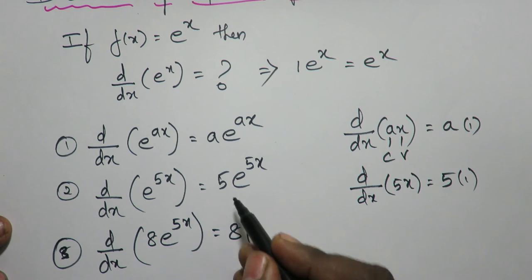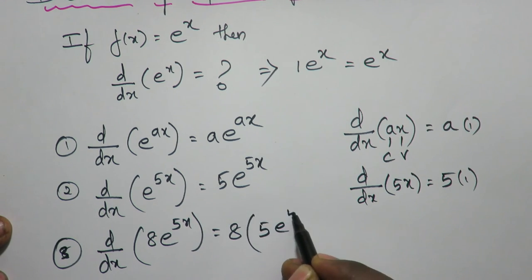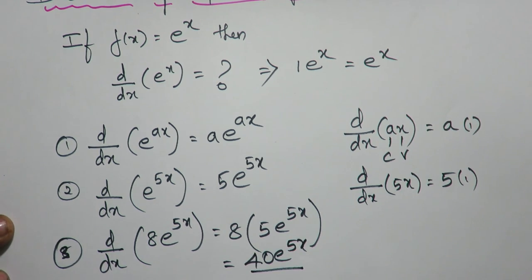What is the derivative of e^5x? It is 5e^5x. Which equals 8 times 5, that's 40e^5x. That's my answer.